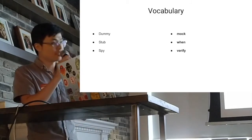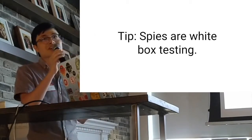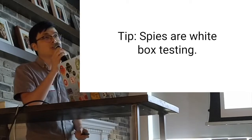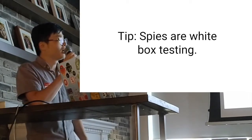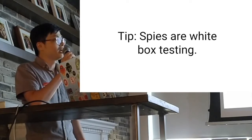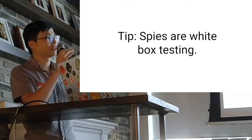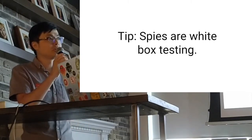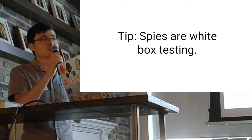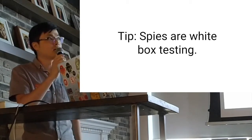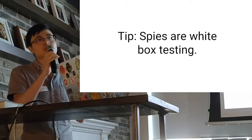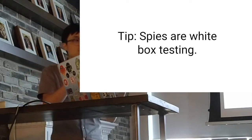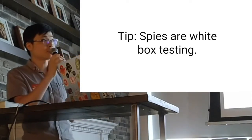Here comes the first tip: spies are white box testing. Unit tests usually treat all the classes you test as a black box. You want to test the public methods instead of internal components. In some scenarios, when you feel like you really want to test internal components, it usually means your class is too big. You want to refactor your class — move those internal components into separate classes so they can be tested separately.